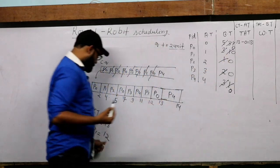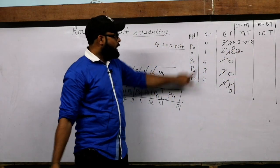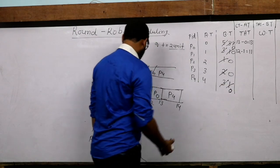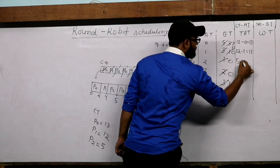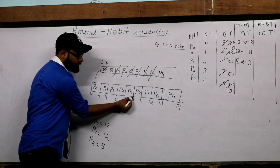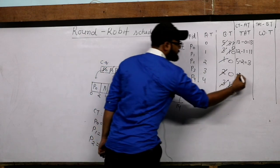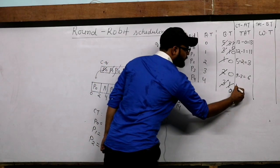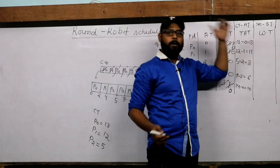Turnaround time of P1 = completion time 12 minus arrival time 1 = 11. Turnaround time of P2 = 5 minus 2 = 3. Turnaround time of P3 = completion time 9 minus arrival time 3 = 6. Turnaround time of P4 = completion time 14 minus arrival time 4 = 10.